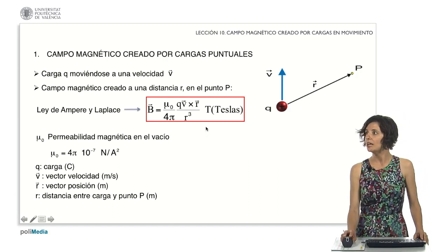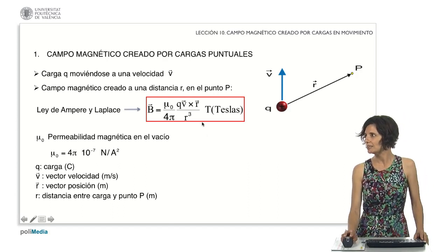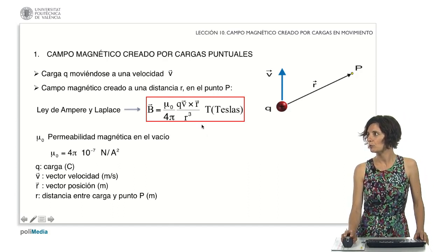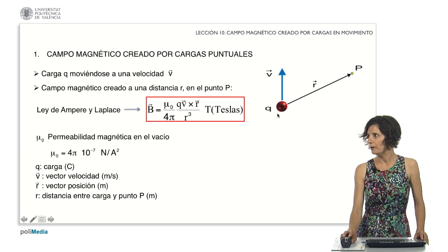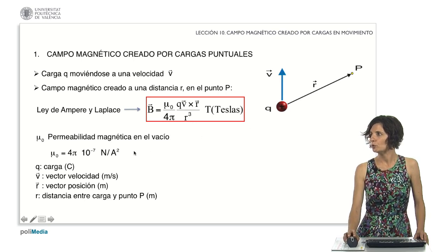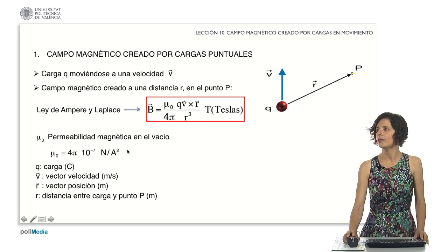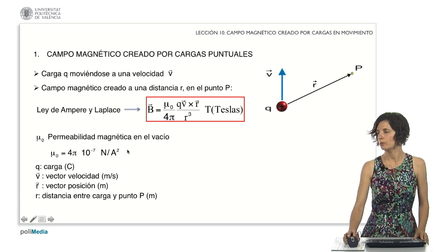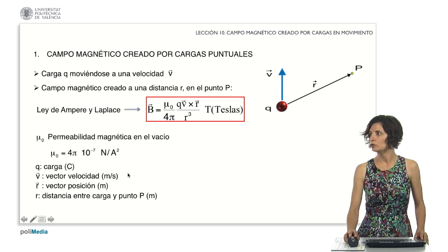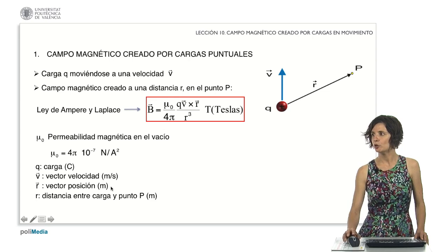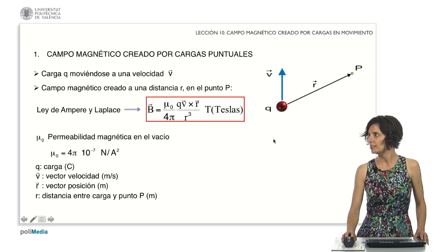Magnetic field produced by point charges. Ampere and Laplace derived an expression that determines the magnetic field at a point P, created by a point charge moving with velocity V. In the expression, mu sub-zero is the magnetic permeability in a vacuum, equal to 4 pi times 10 to the power of minus 7 newtons divided by Ampere squared. Q is the charge in Coulombs, V the velocity vector in meters per second, and R represents the position vector in meters.